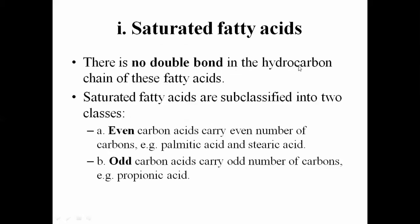Saturated fatty acids are further divided into two groups: those with even carbon numbers and those with odd carbon numbers. For example, palmitic acid has 16 carbons and stearic acid has 18 carbons — these are fatty acids having an even number of carbons.